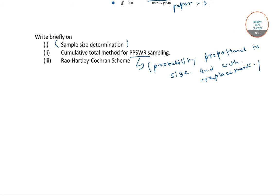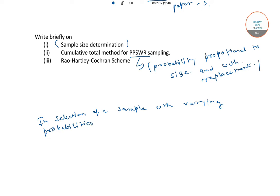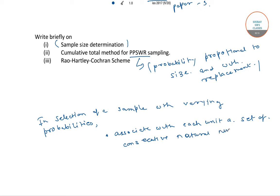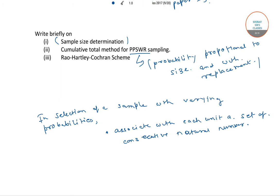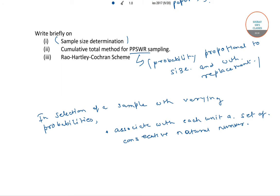In selection of a sample with varying probabilities, the procedure is to first associate with each unit a set of consecutive natural numbers, with the size of the set being proportional to the desired probability.